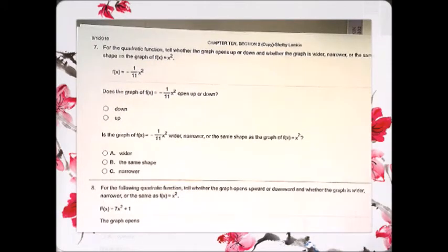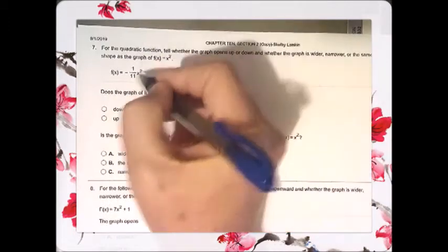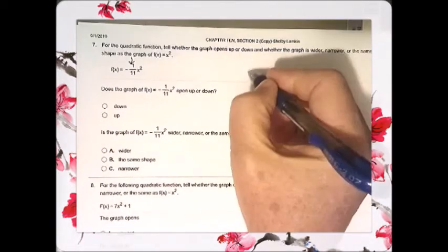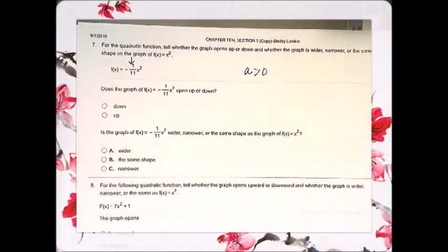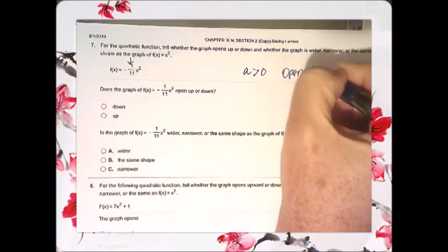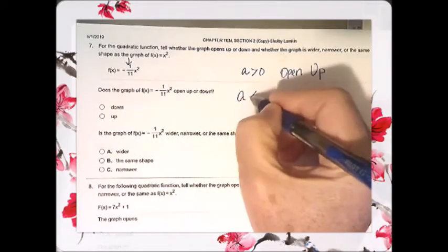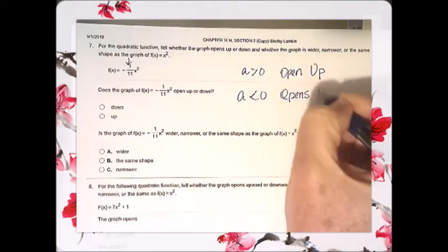Number 7, ask us to describe this graph. It says for this quadratic function, tell whether it opens up or down and whether the graph is wider, narrower, or the same as the parent function f of x equals x squared. Well, a is the number in front of x squared. If a is greater than 0, if a is positive, then your graph is going to open up. If a is less than 0, it opens down.